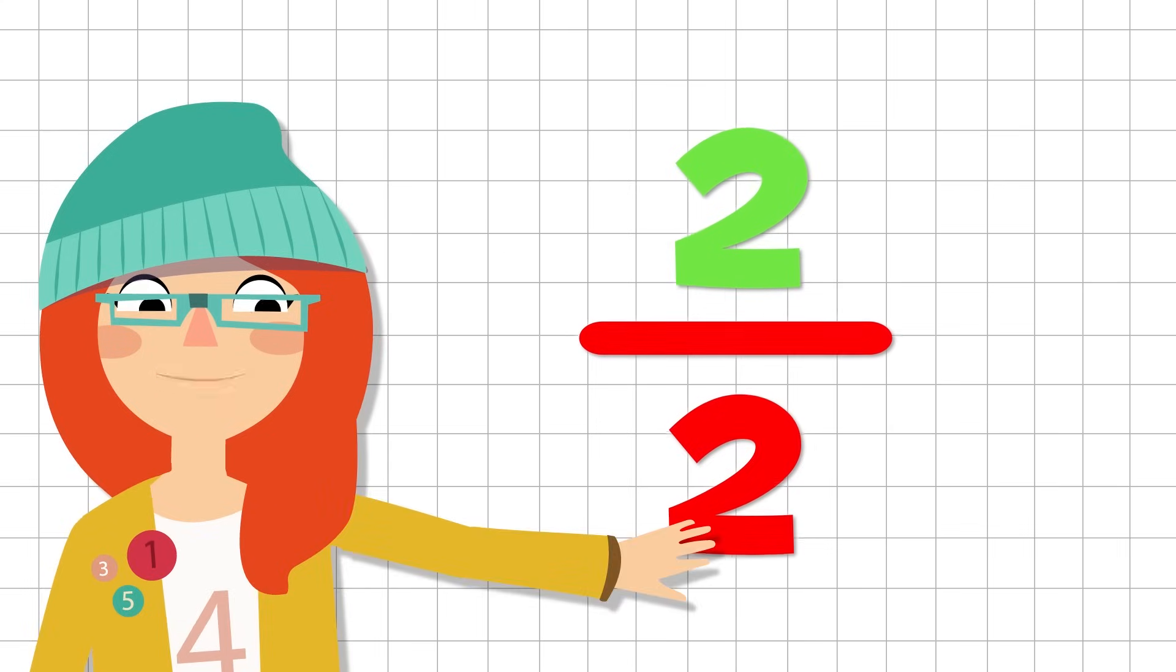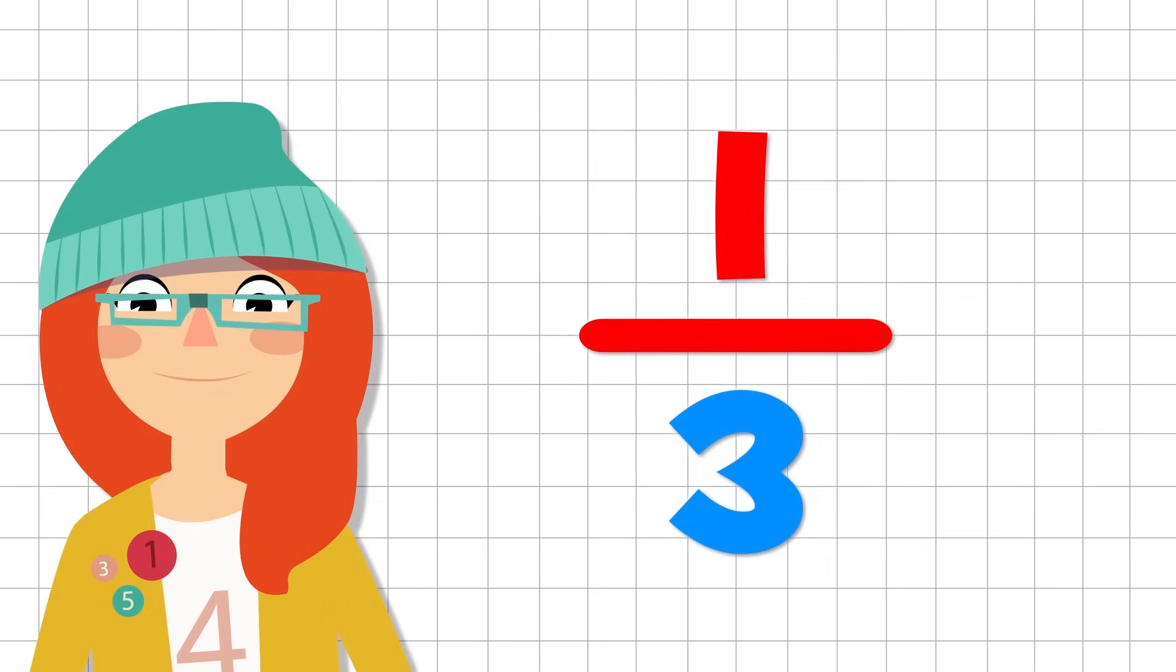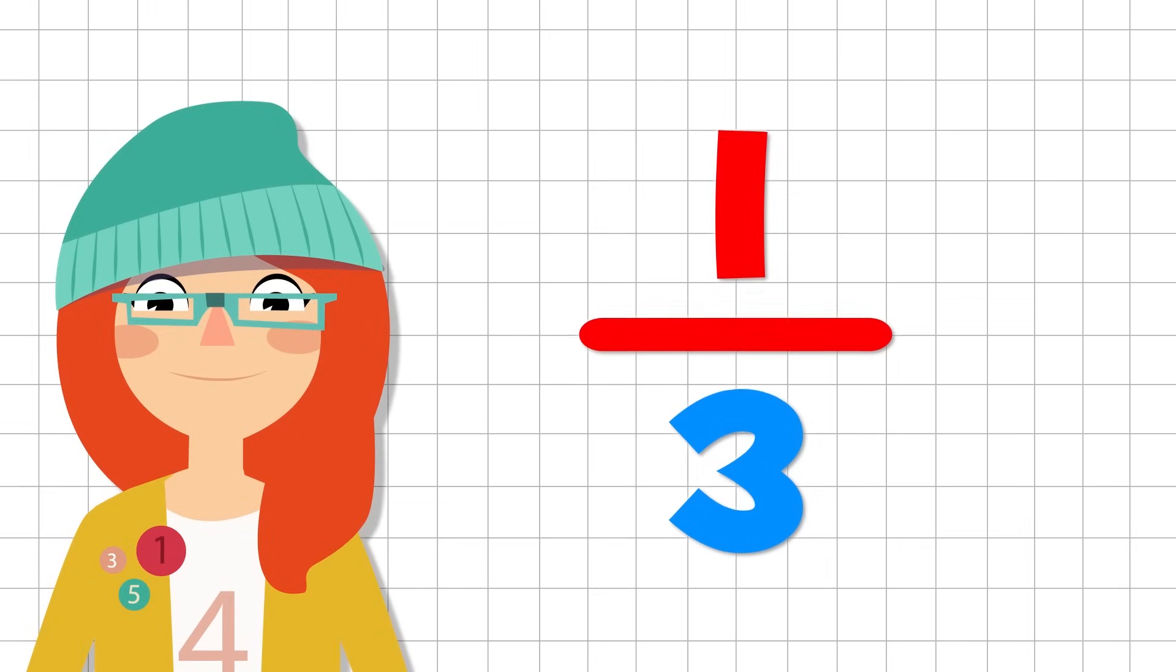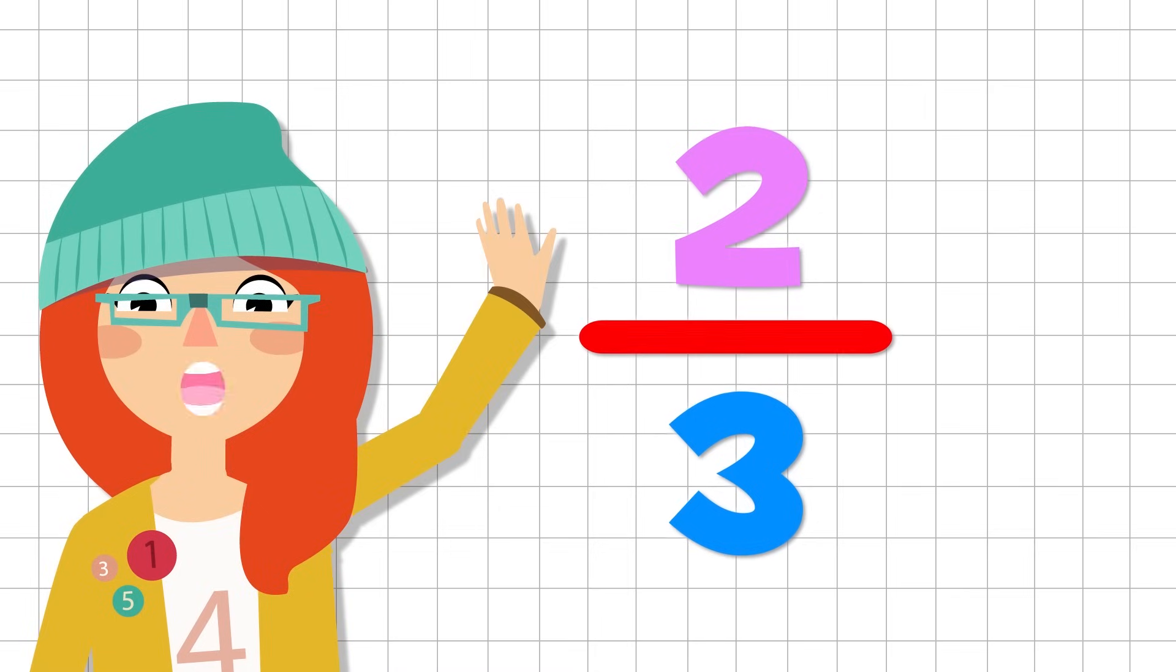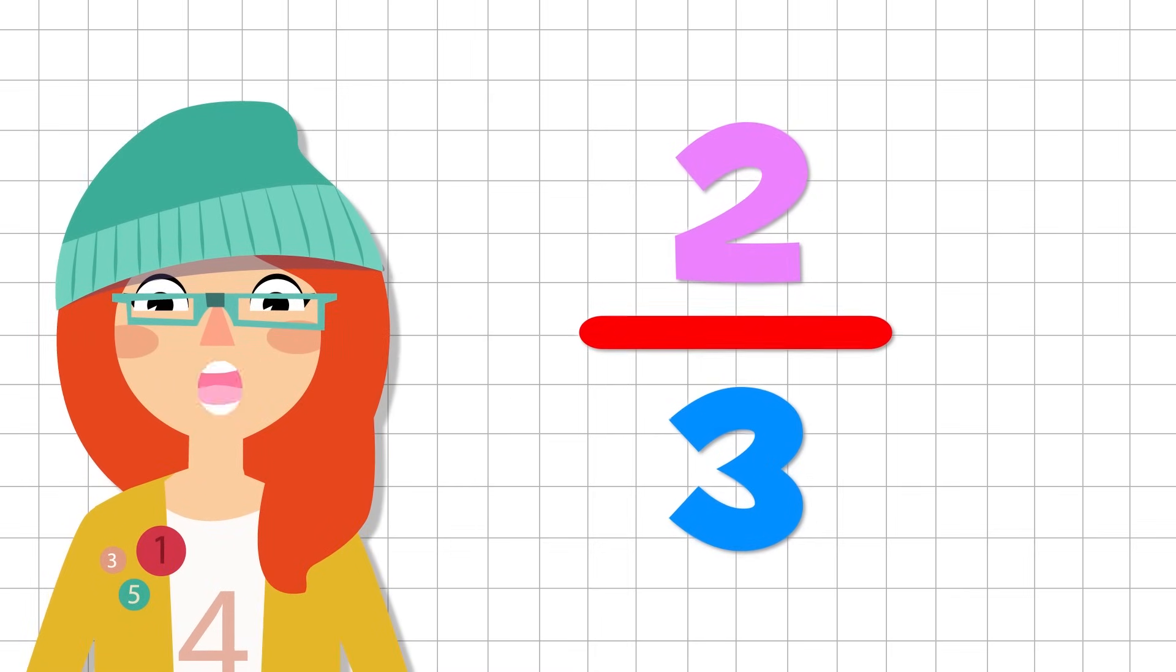When the denominator is a three, we say third. This means that this fraction would be... Come on! You say it! That's it! One third. And if I use a two for the numerator, how would we read the fraction? Two thirds! Great!